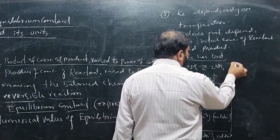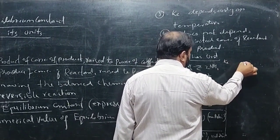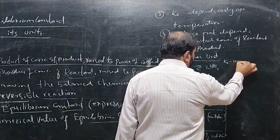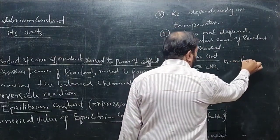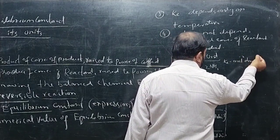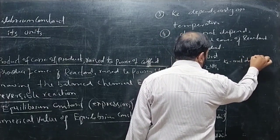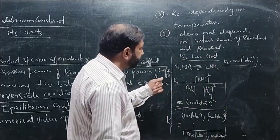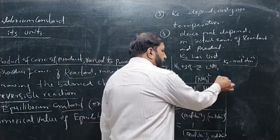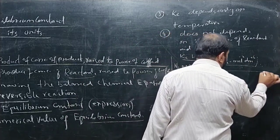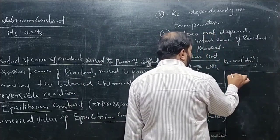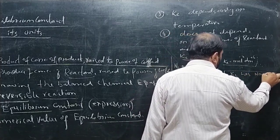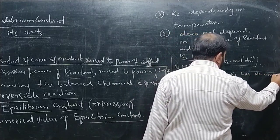So the units of Kc for this ammonia synthesis reaction work out to mol⁻² dm⁶. This means Kc has units for this particular reaction. We can see that for a different reaction, Kc may have no units.